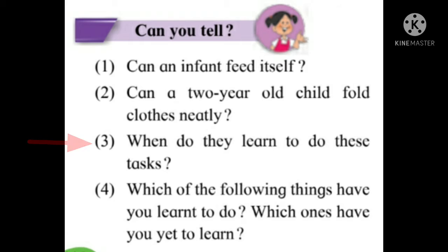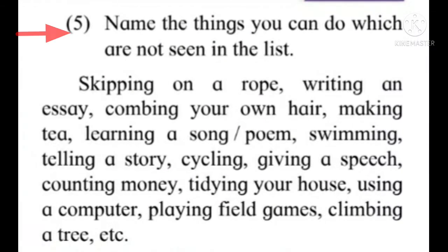The child can fold clothes after becoming five years old. Which of the following things have you learned to do, and which have you yet to learn? Think and write. Examples include: skipping rope, writing an essay, combing your own hair, making tea, learning a song or poem, swimming, telling a story, cycling, giving a speech, counting money, tying shoelaces, using a computer, playing field games, and climbing trees.